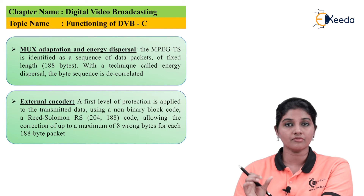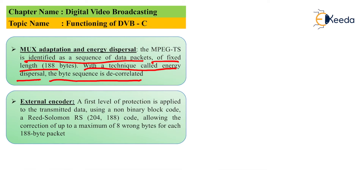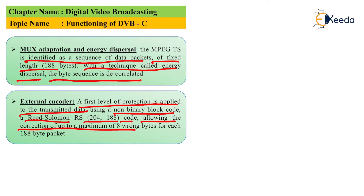In the cable TV adapter, the first block is the MUX adaptation and energy dispersal block. The MPEG-TS signal is received as input and identified as a sequence of fixed-length data packets, generally consisting of 188 bytes. Using a technique called energy dispersal, the byte sequence is decorrelated. Next, the external encoder applies a first level of protection to the transmitted data using a non-binary block code. The Reed-Solomon 204/188 code is used, allowing correction of up to a maximum of 8 wrong bytes per 188-byte packet.